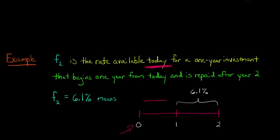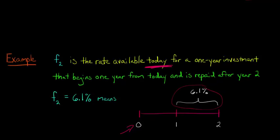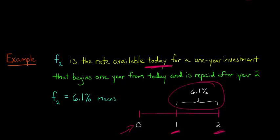Right here we're not going to have any investment, but we're locking in the rate right now — and we'll have 6.1%, that'll be our rate for this period. So at the end of one year from now, this starts, and then it ends at the end of year two. We're locking in that rate today, even though this investment or loan doesn't start until a year from now. That's a forward rate, and we can denote it with an F and a subscript 2 to mean forward rate for year two.